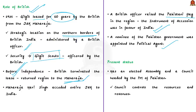At present, the Gilgit-Baltistan region has an elected assembly and a council headed by the Prime Minister of Pakistan. This council wields all the powers and controls the resources and revenues from the region. The region is neither independent nor does it have any provincial status in Pakistan, which is why the Pakistani government is now planning to give it a provisional provincial status by passing a law.